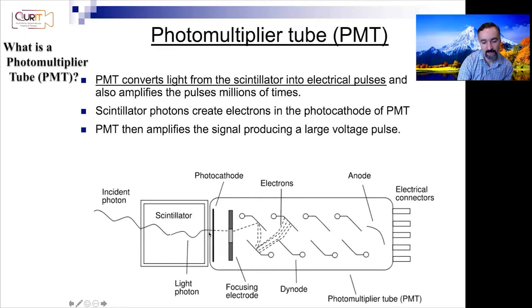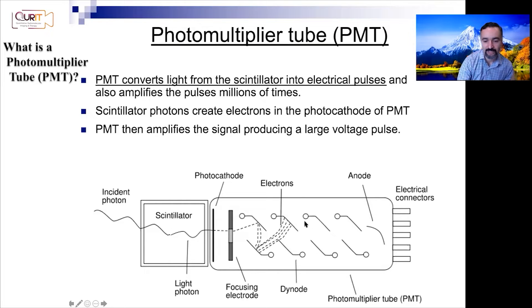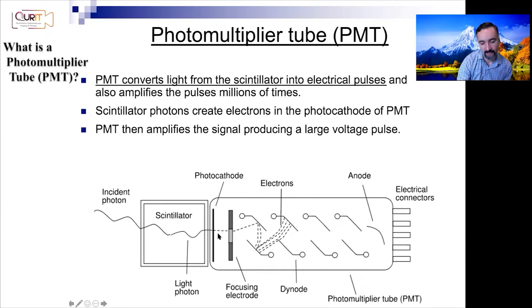Those thousands of scintillation photons we want to further amplify to get an electrical signal. Imagine just one of those scintillation photons entering the PMT. Its job is to convert light into electrical pulses. It enters the photocathode part of the PMT, where the photoelectric effect — for which Einstein won the Nobel Prize — generates an electron.